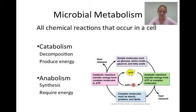This diagram summarizes the relationship between catabolism and anabolism. Starting at the bottom in the blue box, we see the three macromolecules that provide energy: starch, proteins, and lipids. Moving clockwise in the diagram up to the purple box, we see that the macromolecules can be broken up into their monomers.